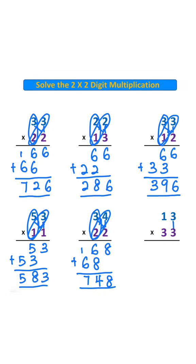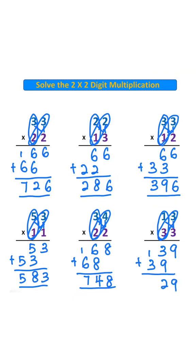3 times 3 is 9. 1 times 3 is 7. 4 times 3 is 7. 1 times 3 is 7. 9 plus 0 is 9. 3 plus 9 is 12. 1 plus 3 is 4. Answer is 429.